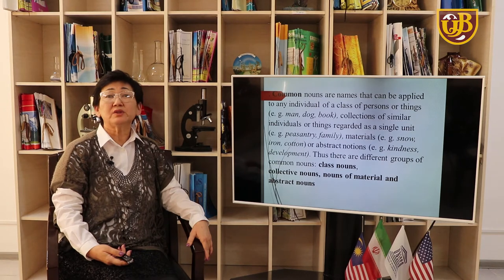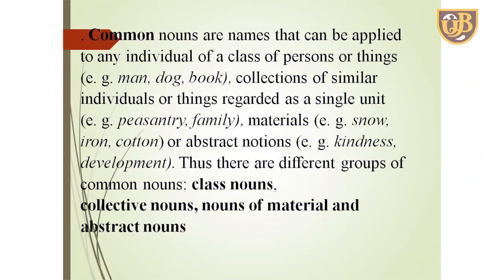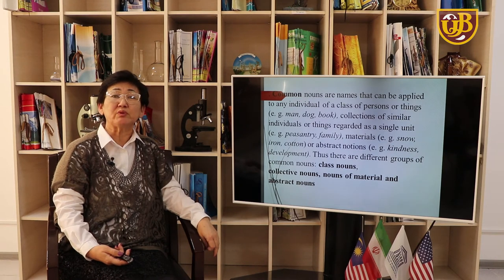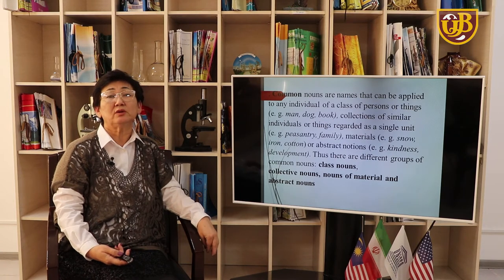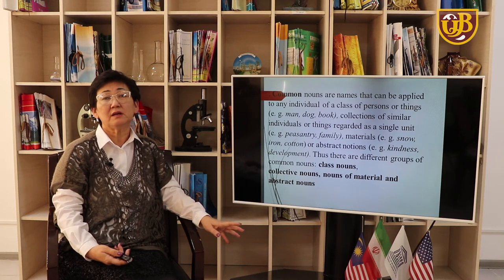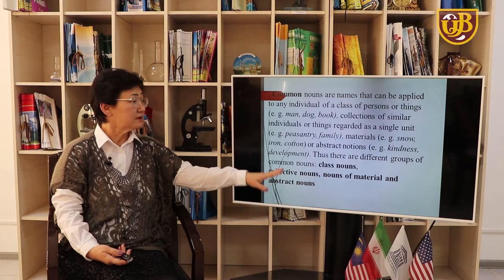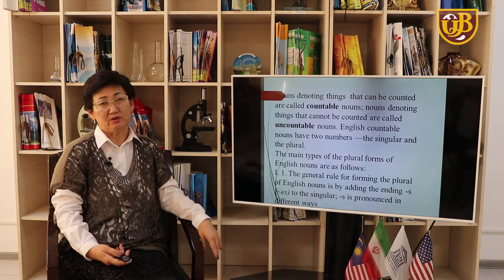Common nouns are names that can be applied to any individual of a class of persons or things — man, dog, book — or collections of similar individuals regarded as a single unit — peasantry, family — or materials — snow, iron, cotton, paper — or abstract nouns — kindness, development, fear, love, tenderness. Thus, we have different groups of common nouns: class nouns, collective nouns, nouns of material, and abstract nouns.